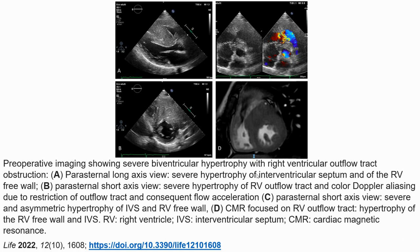This preoperative imaging shows severe biventricular hypertrophy with right ventricular outflow tract obstruction. Parasternal long axis view shows severe hypertrophy of the interventricular septum and right ventricular free wall. Parasternal short axis view shows severe hypertrophy of the right ventricular outflow tract with color flow Doppler analysis demonstrating asymmetric hypertrophy of the IVS and right ventricular free wall.